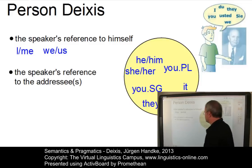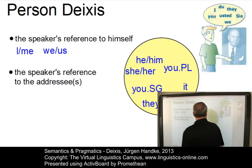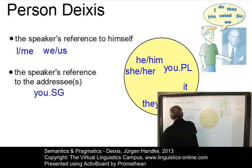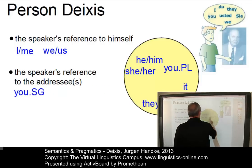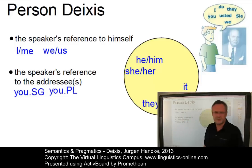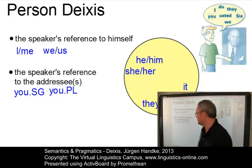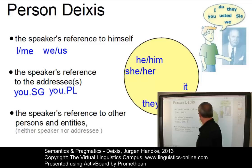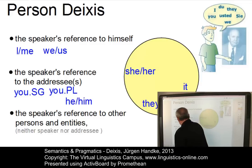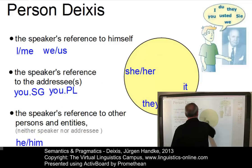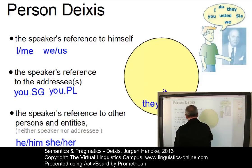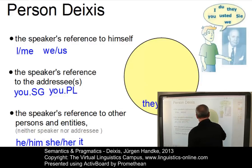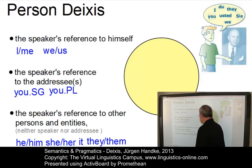Person deixis also involves the speaker's reference to the addressees — that is, the second person. In English, this means 'you' in the singular and 'you' in the plural. And last but not least, we have elements the speaker uses to refer to other persons and entities — typically the third person pronouns: 'he', 'him', 'she', 'her', 'it', and of course 'they' and 'them' in the plural.